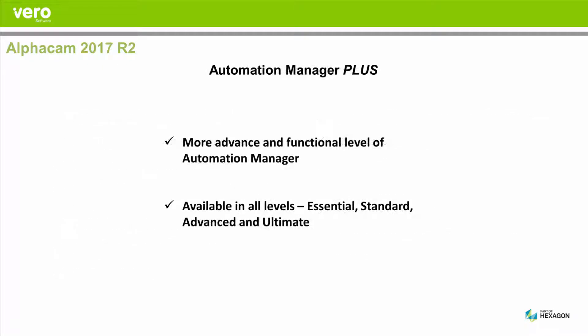In 2017 R2 we also see the introduction of a new higher level of Automation Manager called Automation Manager Plus. This means that advanced functionality like parametric part processing will only be available if you have the Plus version on your license. Please contact Alphacan for an up-to-date feature comparison chart.